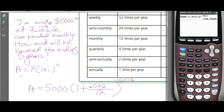The result is $7,158.94. If this were a numeric response question with only four blanks, you'd round to the nearest dollar: $7,159.